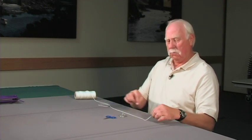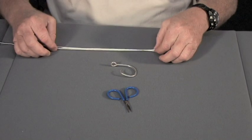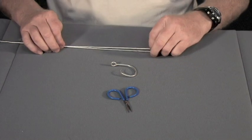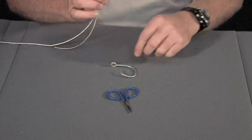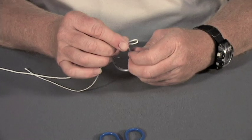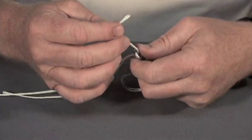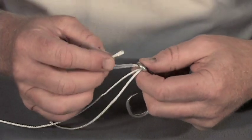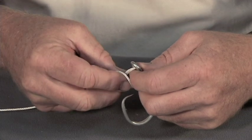Take the end of your line and overlap it. Make a loop with the end and put that loop through the eye of your hook and tie one overhand knot.